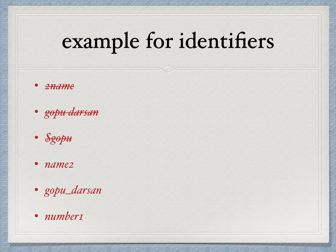But the last three are the correct ones: name2 can be given, gopu_darsan can be used, number1 also can be used. These are the three which follow the rules of identifiers.